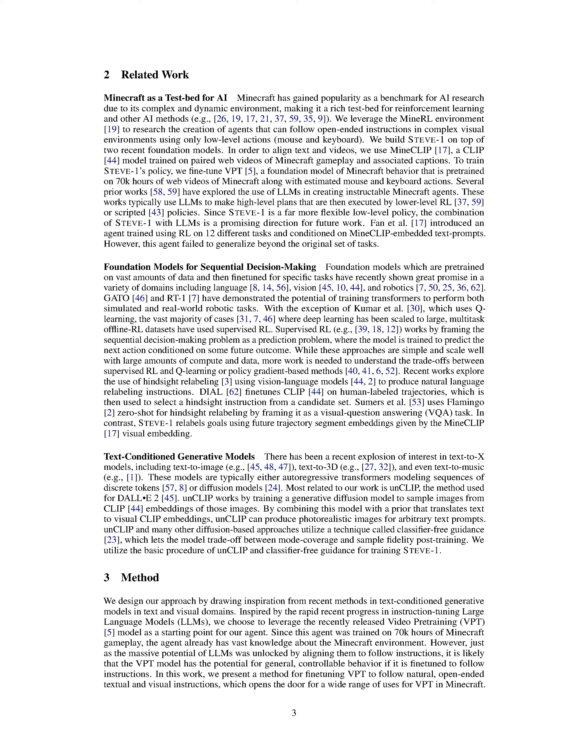We've recently seen a surge of interest in models that convert text into various formats, such as images, 3D models, and even music. One method particularly relevant to our work is UnClip, which was used for DALL-E 2. UnClip operates by training a generative model to create images from the CLIP embeddings of those images. When combined with a prior that converts text into visual CLIP embeddings, UnClip can generate photorealistic images from any text. UnClip and similar approaches use a technique known as classifier-free guidance, which allows the model to balance between mode coverage and sample fidelity after training. We use the basic procedure of UnClip and classifier-free guidance to train our agent.